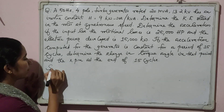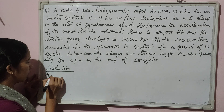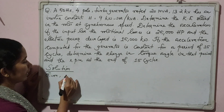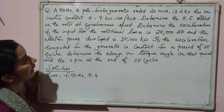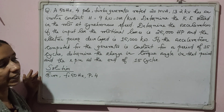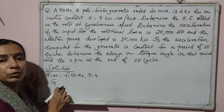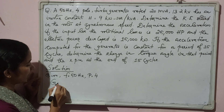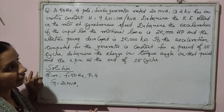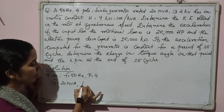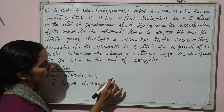Let us write the parameters given. F is equal to 50 Hz. Number of poles is 4. The machine is rated 20 MVA, so we denote rating in MVA using capital letter G. G is equal to 20 MVA. 13.2 kV has an inertia constant H. H is equal to 9 kilowatt-seconds per kVA.